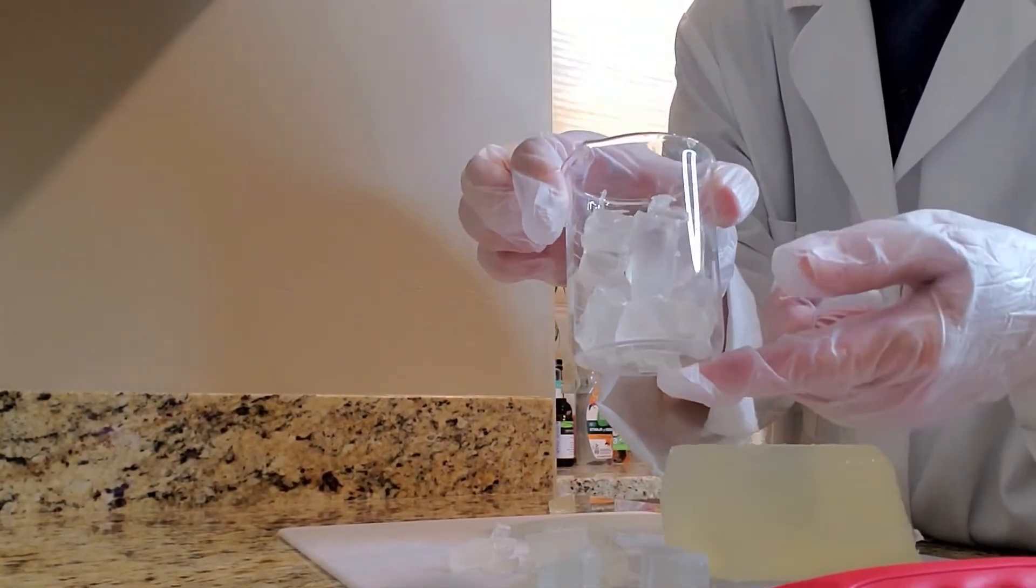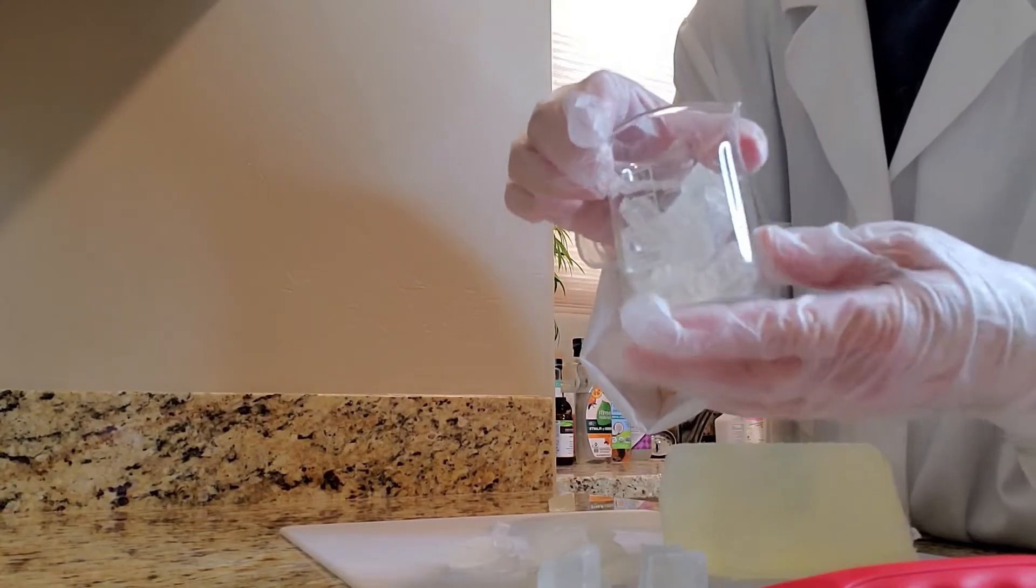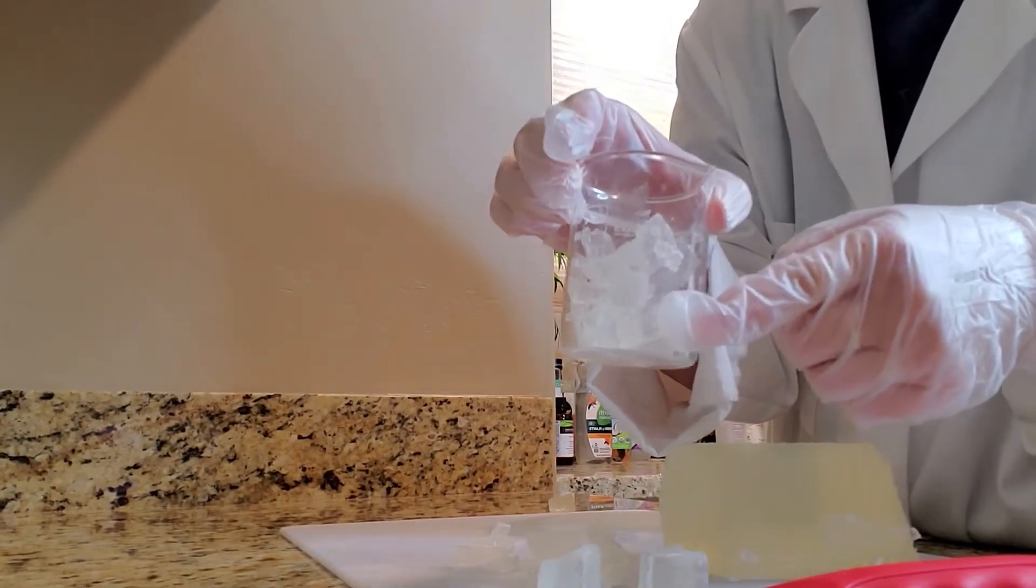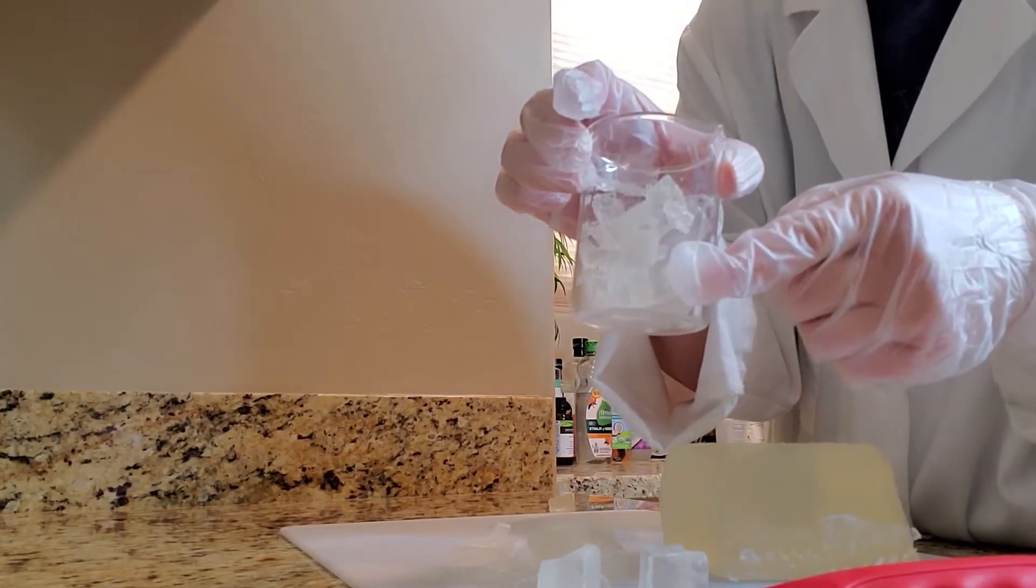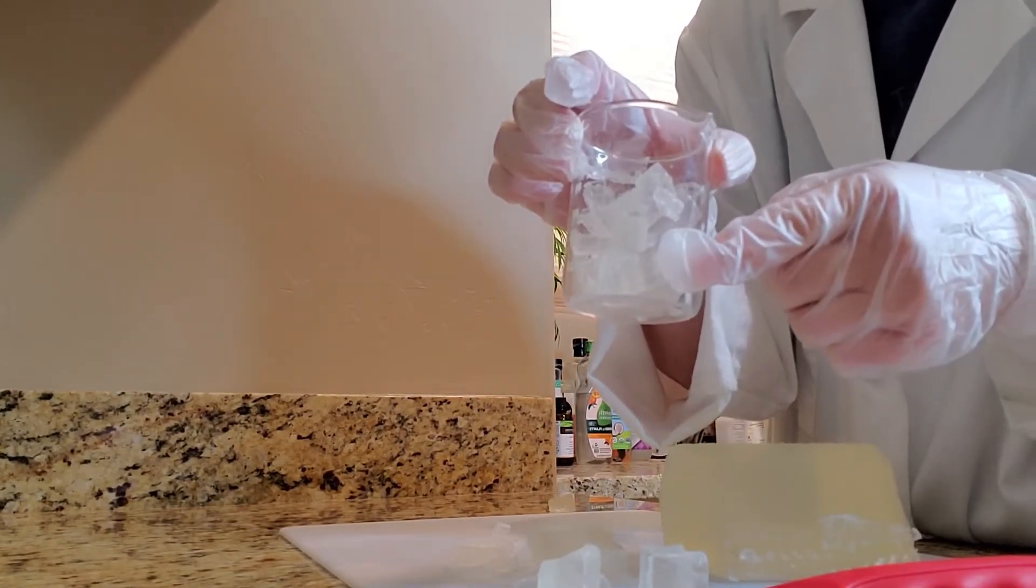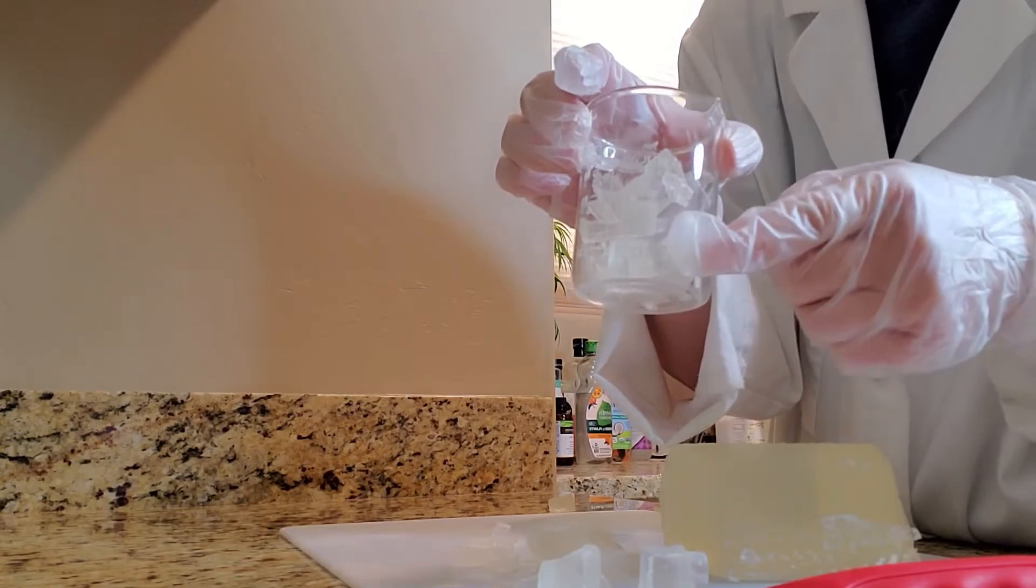Now I've put all my melt and pour soap in my heat safe container and I'm going to go ahead and just heat it on the stove in my double boiler method.